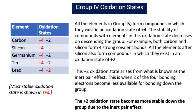Silicon only has an oxidation state of plus 4. Germanium has oxidation states of plus 4 and plus 2, but plus 4 is the most stable. Tin has oxidation states of plus 4 and plus 2, but the plus 4 state is the most stable. Lead has oxidation states of plus 4 and plus 2, and the plus 2 oxidation state is the most stable.